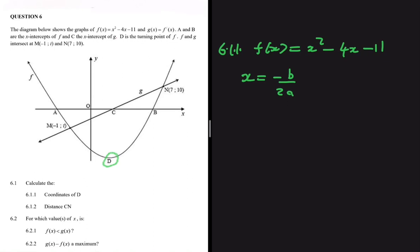Now, b is the coefficient of x and a is the coefficient of x². So this will be equals to minus b, which happens to be minus 4, divided by 2a, where a happens to be 1. So this gives us 4 divided by 2, which equals 2. We now have the x value.